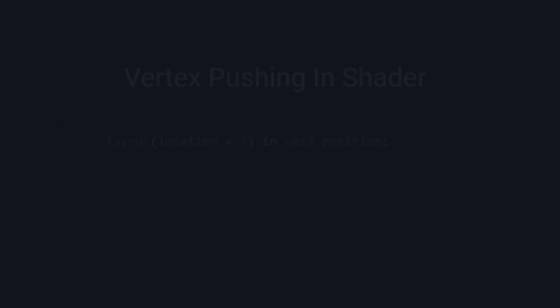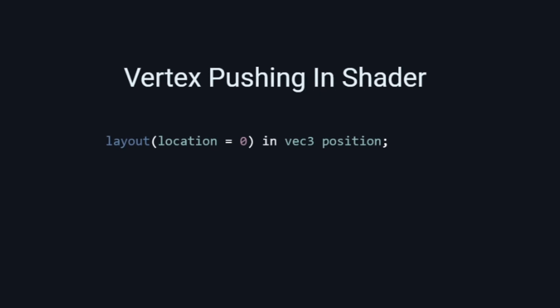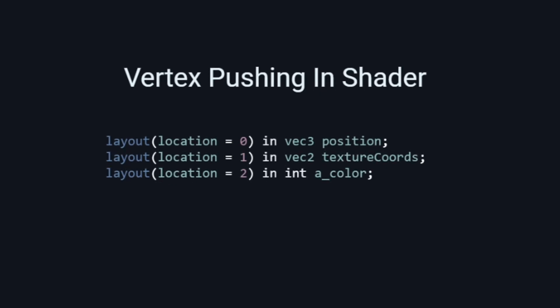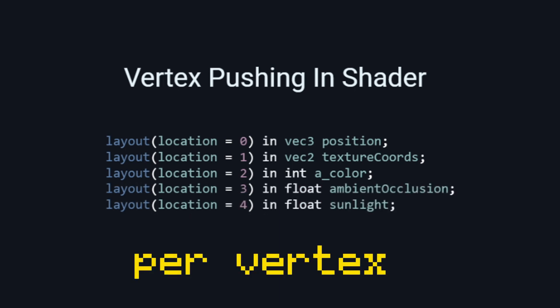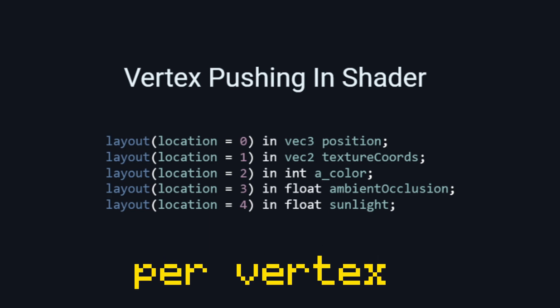Face culling is also known as vertex pushing in OpenGL, where we send data like position and texture coordinates down the rendering pipeline per vertex. Although this method works, it results in some memory problems, and we can probably make better use of our memory.